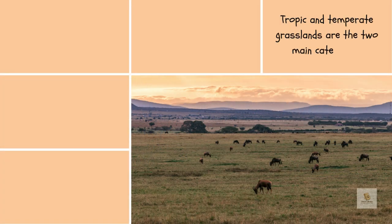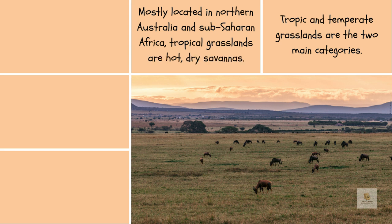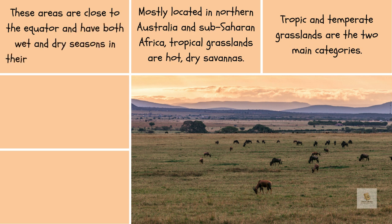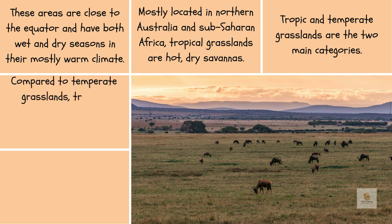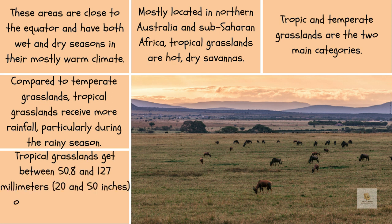Tropical and temperate grasslands are the two main categories. Mostly located in northern Australia and sub-Saharan Africa, tropical grasslands are hot, dry savannas. These areas are close to the equator and have both wet and dry seasons in their mostly warm climate. Compared to temperate grasslands, tropical grasslands receive more rainfall, particularly during the rainy season. Tropical grasslands get between 50.8 and 127 millimeters (20 and 50 inches) of precipitation annually.